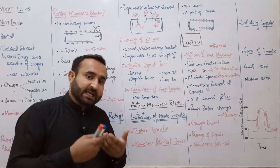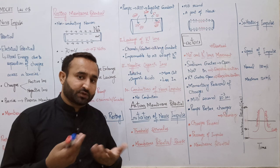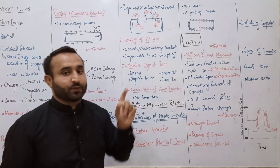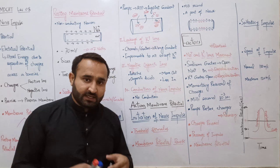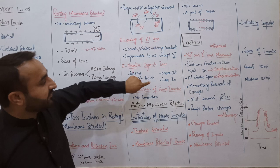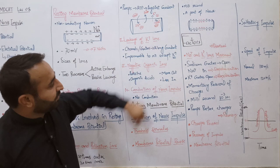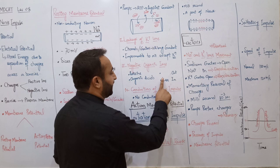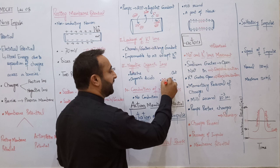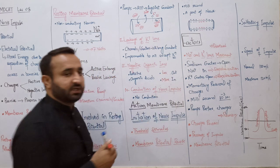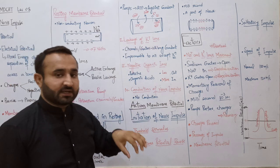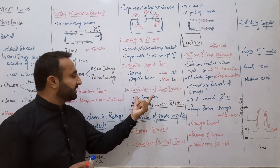تیسرا factor ہے negative organic ions۔ Nerve cell کی plasma membrane کی inner side پہ negative organic ions زیادہ ہوتے ہیں - جیسے protein ions اور organic acids (carboxylic acids)۔ یہ more inside اور negligible amount میں outside ہوتے ہیں - یہ بھی وجہ ہے کہ resting membrane potential میں اندر negative charge زیادہ اور باہر positive ہوتا ہے۔